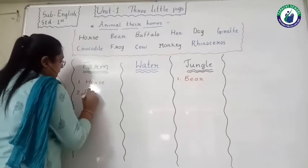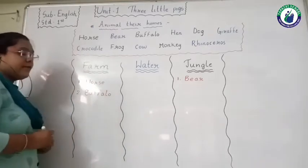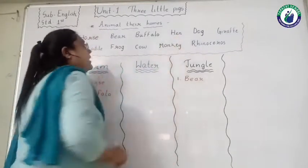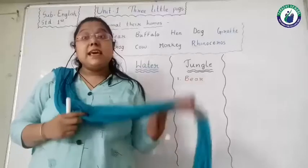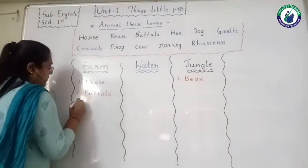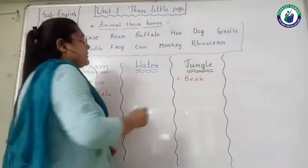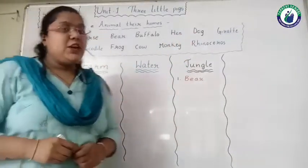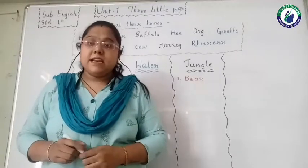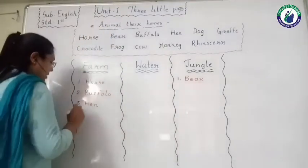Next — H-E-N, hen. We can keep hen near us around our house, so hen will come in the farm animal column. Now next — D-O-G, dog. Some of us are keeping dogs as a pet animal at home, so dog will also come in the farm animal column.